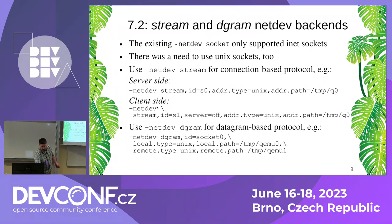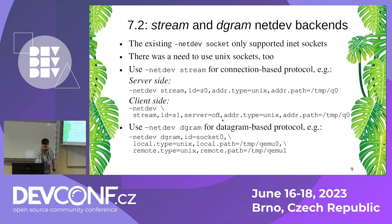On the client side — the other QEMU instance you want to connect to — you do basically the same, just say server equals off. You can also use datagram-based protocols, depending on what you prefer.